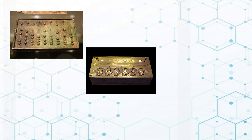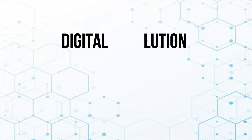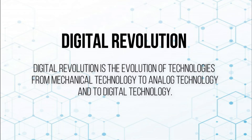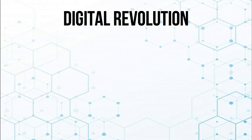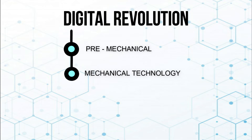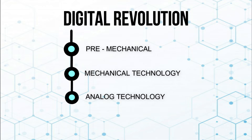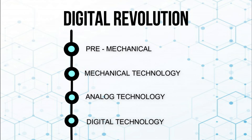The journey from the abacus to the creation of the Pascaline and to smartphones can be called the digital revolution. Digital revolution is defined as the evolution of technologies from mechanical to analog and to digital technology. Digital revolution has four stages: the pre-mechanical, mechanical technology, analog technology, and digital technology.